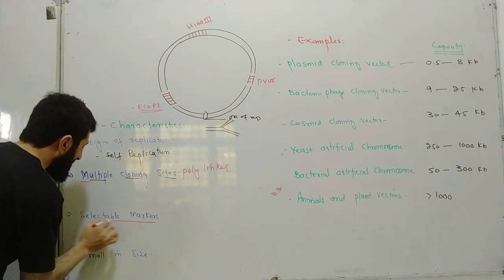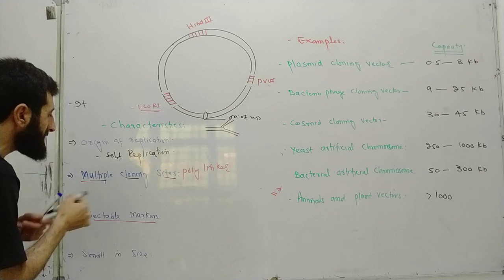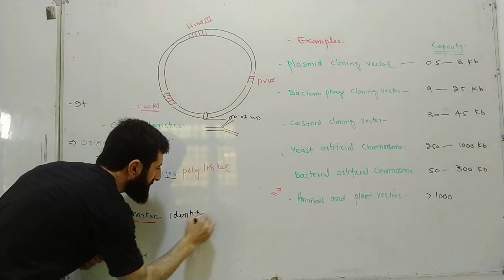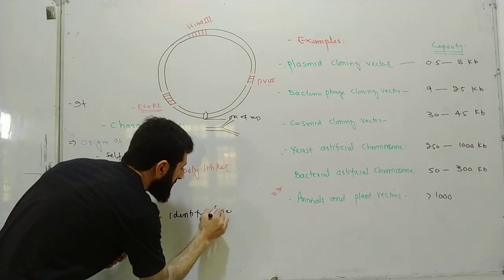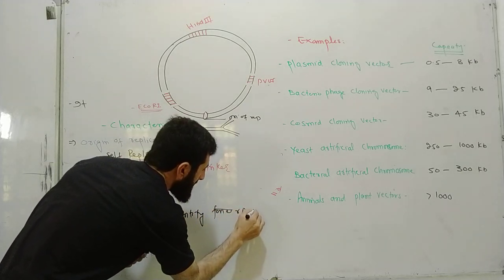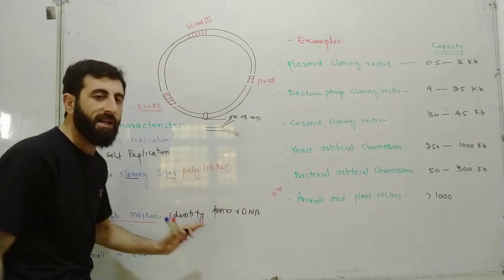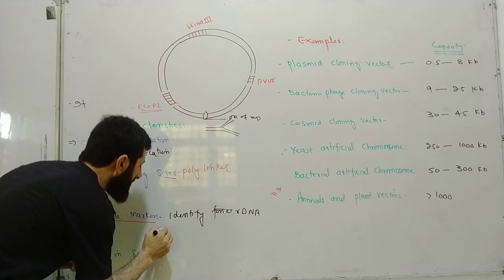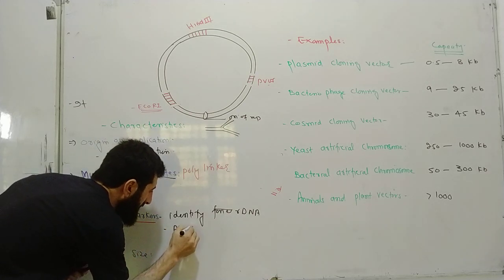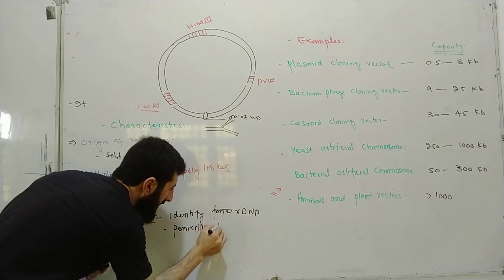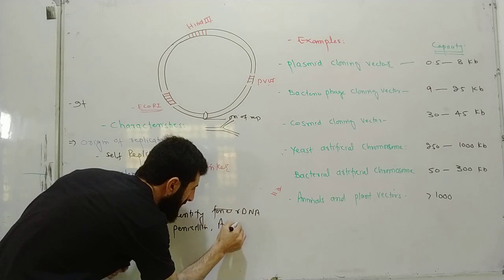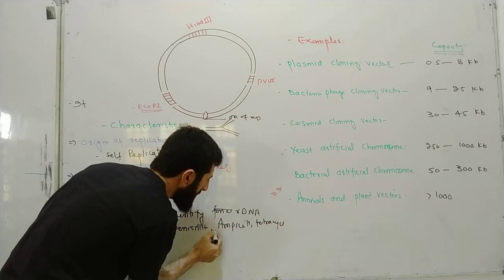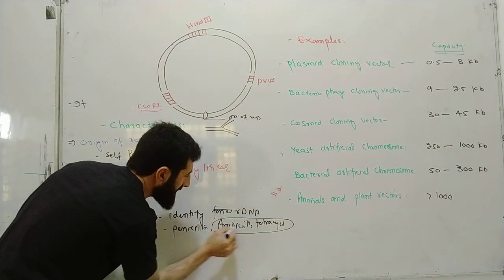The plasmid also contains selectable markers. Selectable markers help us identify recombinant DNA. Examples of selectable markers include antibiotic resistance genes such as penicillin resistance and tetracycline resistance.